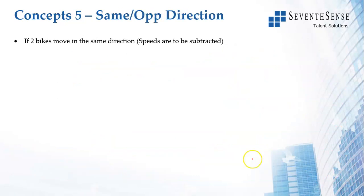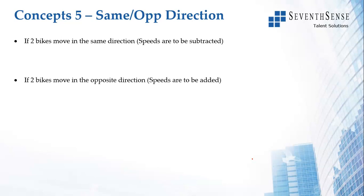Two bikes moving in the same direction: if you remember from school, when two vehicles travel in the same direction, you use the concept of relative speed. If moving in the same direction, the relative speed is the difference of the two speeds. If they are moving in opposite directions, the speeds have to be added — regardless of how fast or slow each one is. We will encounter these problems in subsequent slides.